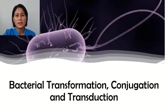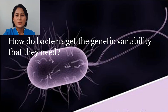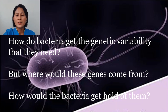But this is not the case. Prokaryotic cells have developed a number of methods of recombining their genetic material, which in turn contributes to their genetic variability. But how do bacteria get the genetic variability that they need? They might need a gene to break down an unusual nutrient source or degrade an antibiotic threatening to destroy them. Acquiring the gene would mean a difference between life and death. But where would these genes come from and how would the bacteria get hold of them?